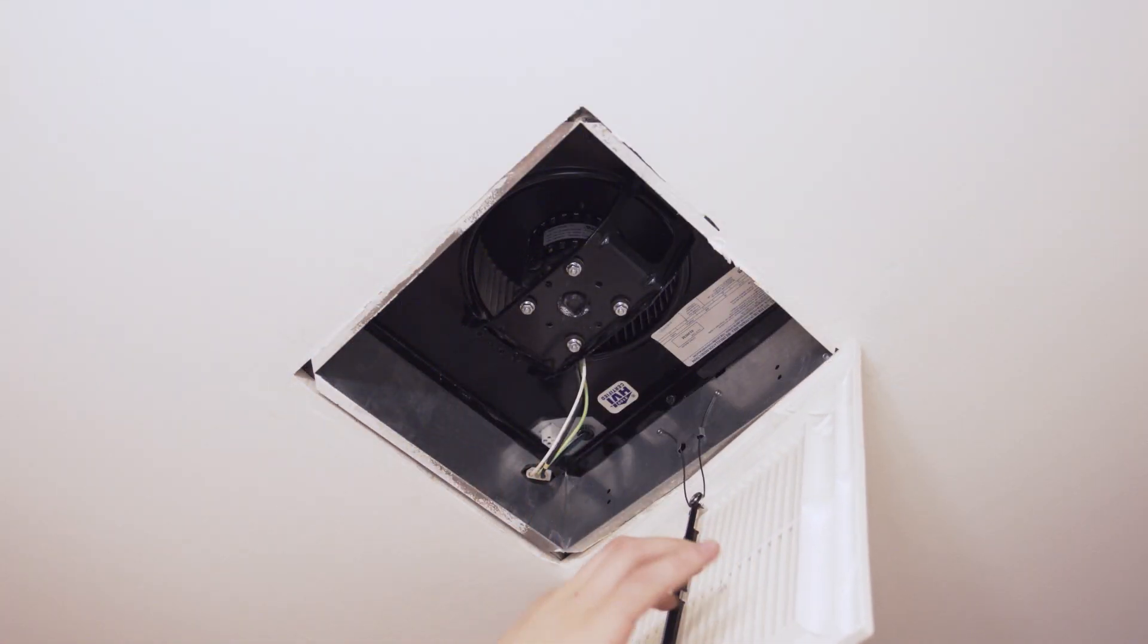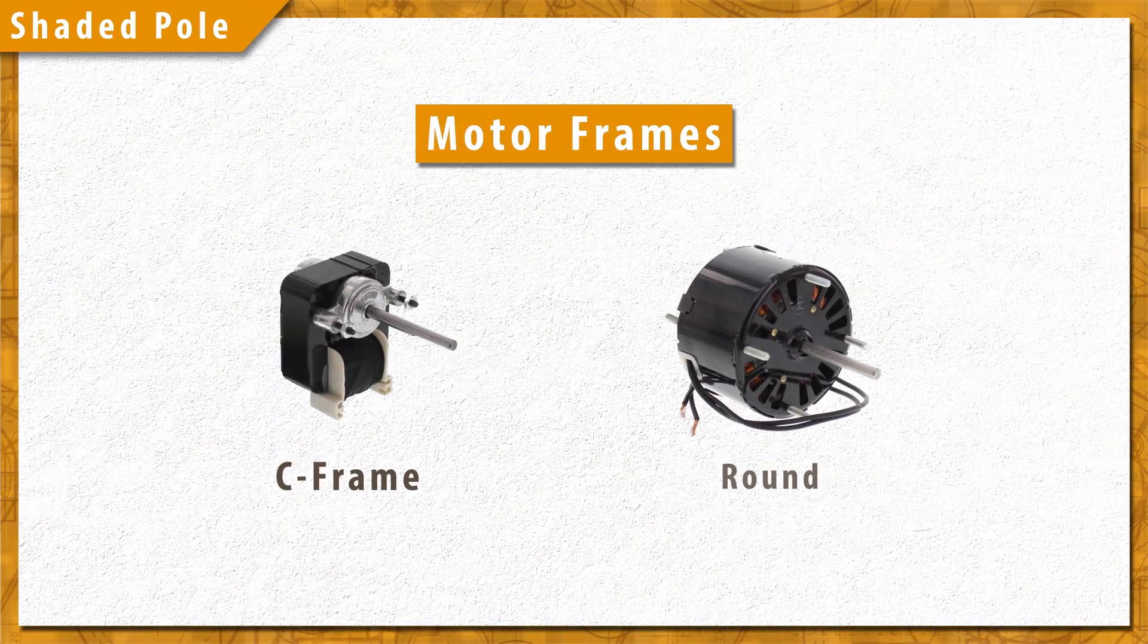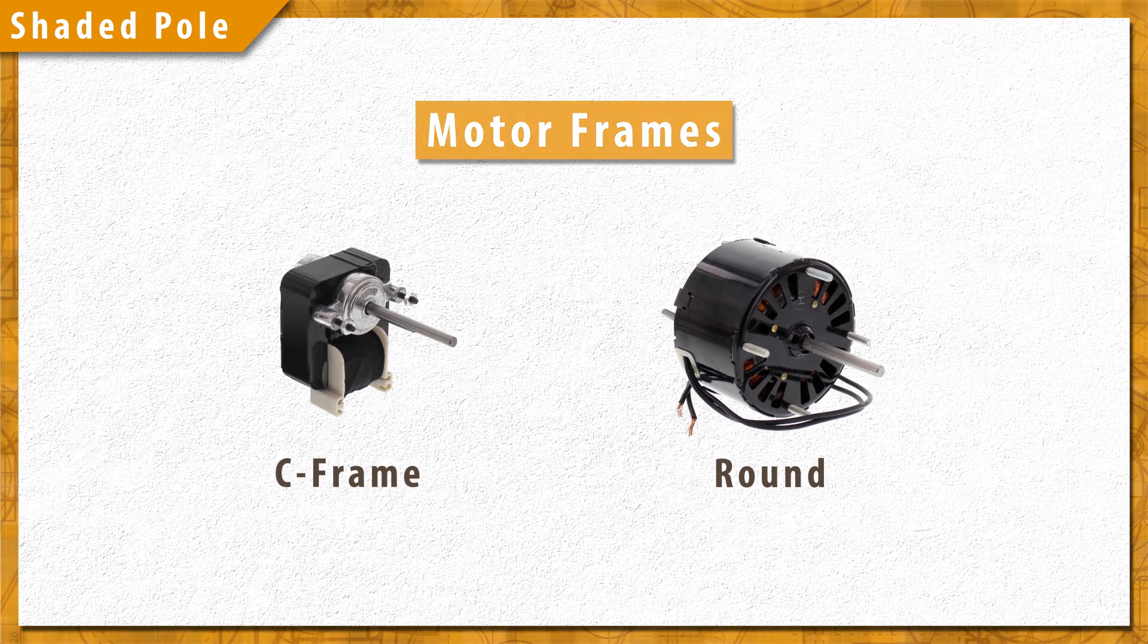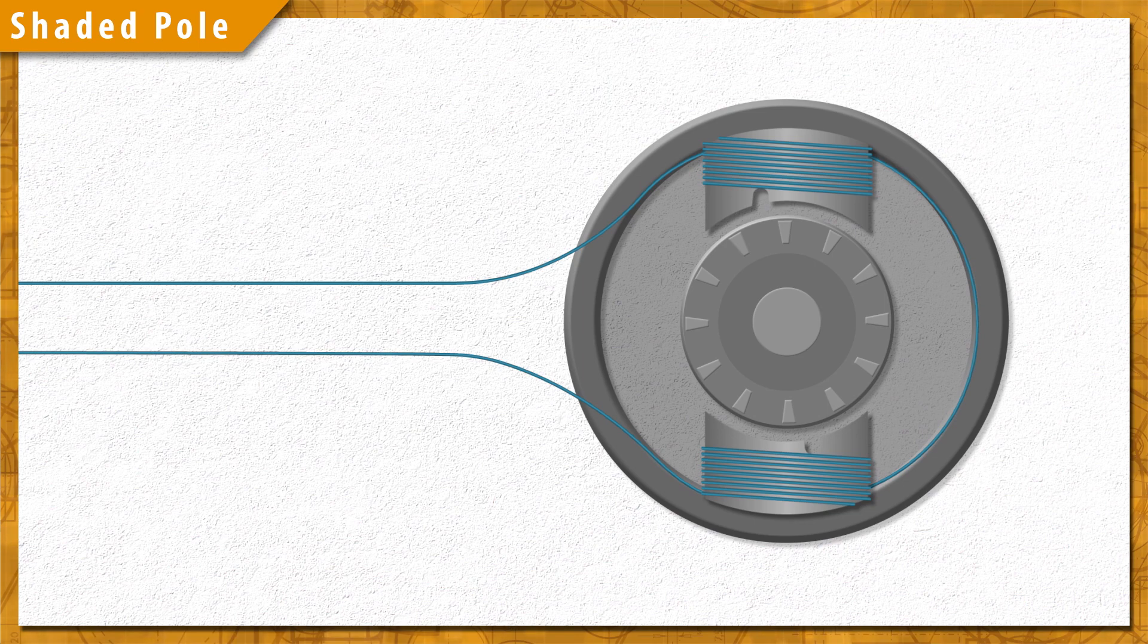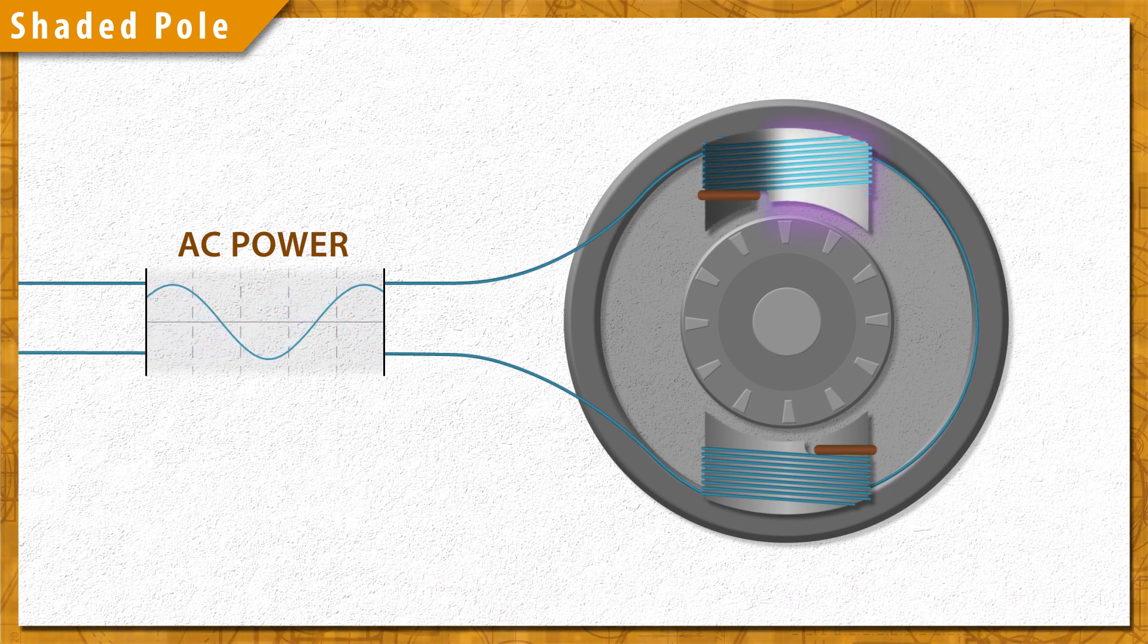Shaded pole motors are electrically and mechanically simple motors. They are available in the C frame and round designs, and are very common due to their low cost. They don't use a capacitor, and they don't have an auxiliary winding. Instead, these motors use a shorted copper band around part of the stator. The current in the copper band disrupts the magnetic field, causing the shaded pole to be out of phase with the field generated by the main winding.